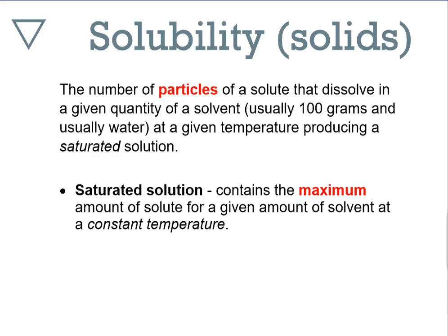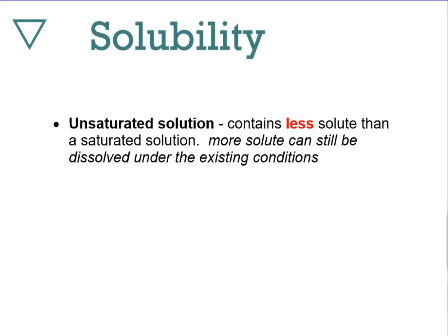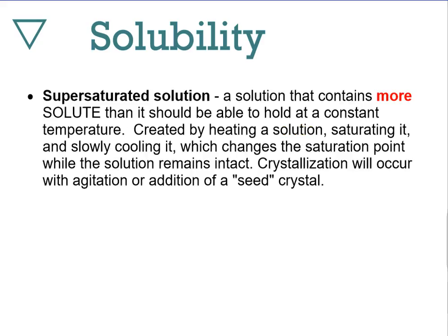First, we need to define some terms. A saturated solution contains the maximum amount of solute for a given amount of solvent at a constant temperature. An unsaturated solution contains less solute than a saturated solution — meaning if you add more solute particles, they will also dissolve. A supersaturated solution contains more solute than it should be able to hold at a constant temperature. We create a supersaturated solution by saturating it and then slowly cooling it, which changes the saturation point while the solution remains intact.